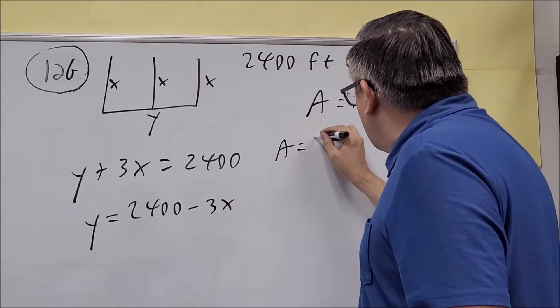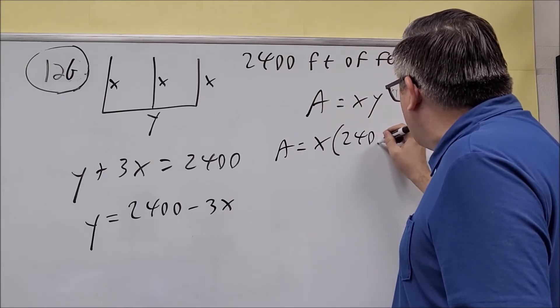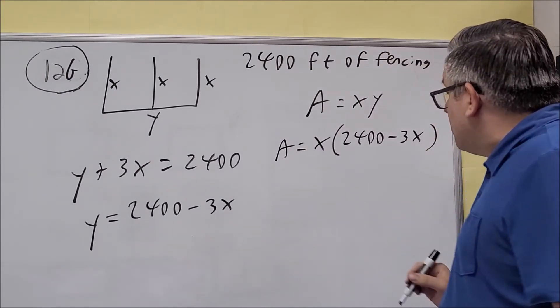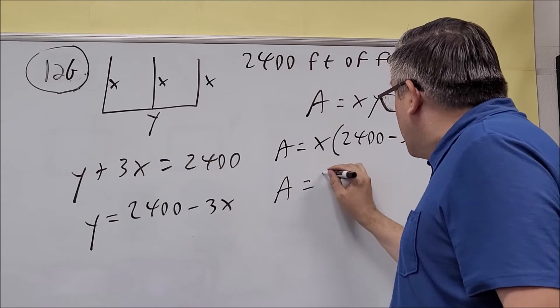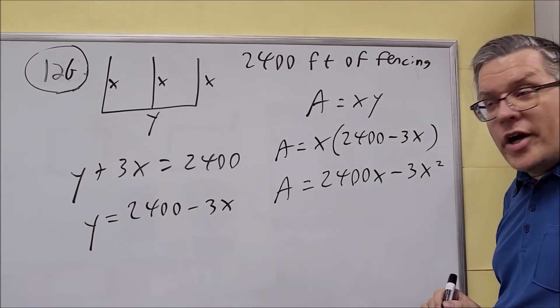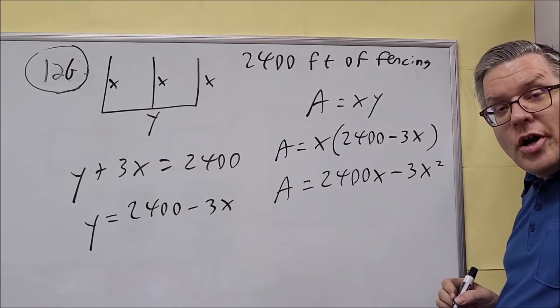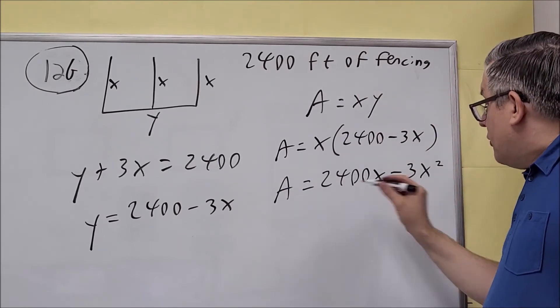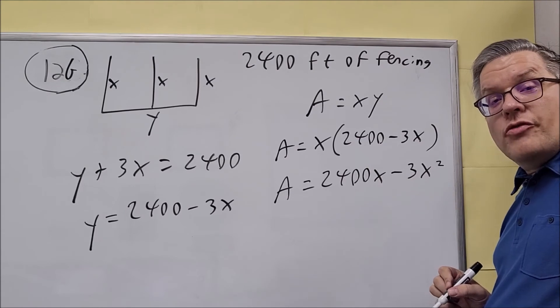So area equals x times (2,400 minus 3x). When you do that, you get 2,400x minus 3x squared. We're just distributing that into each one. This is the formula we'll take the derivative of.